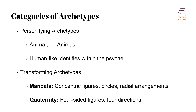Jung identified two broad categories of Archetypes: personifying and transforming Archetypes. Personifying Archetypes take on human-like identities within the psyche and shape interpersonal interactions and relationships between the sexes. Key examples include Anima and Animus. The Anima represents all of a man's ancestral experiences with women, while the Animus embodies one's interactions with the opposite sex and contributes to one's inner psychological life.